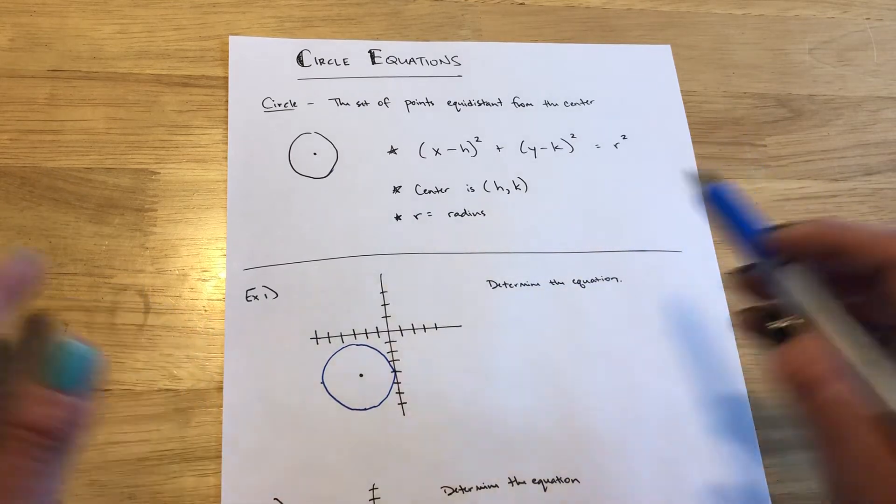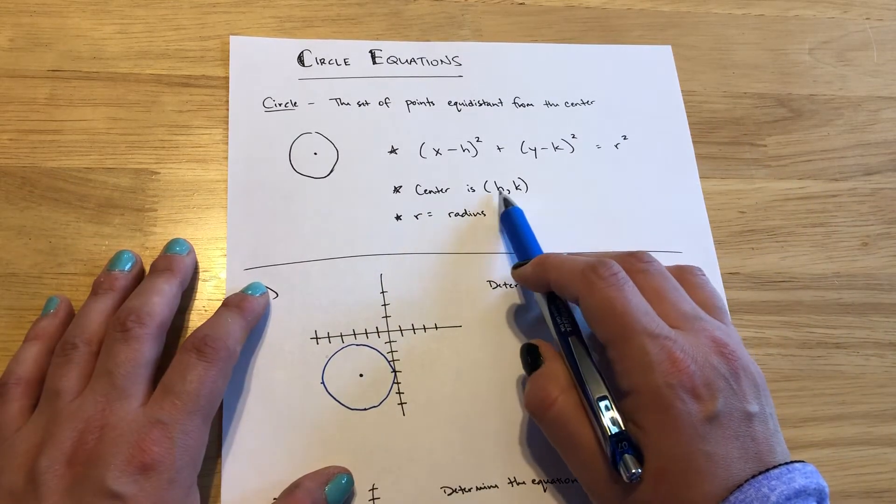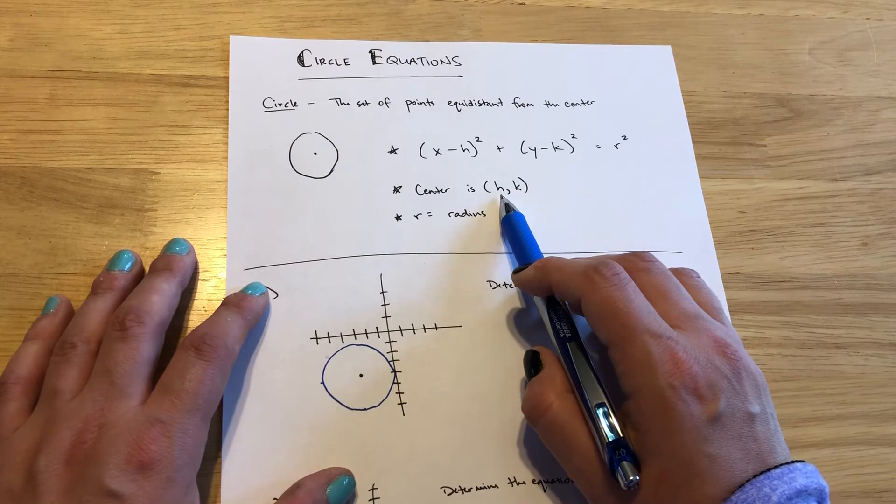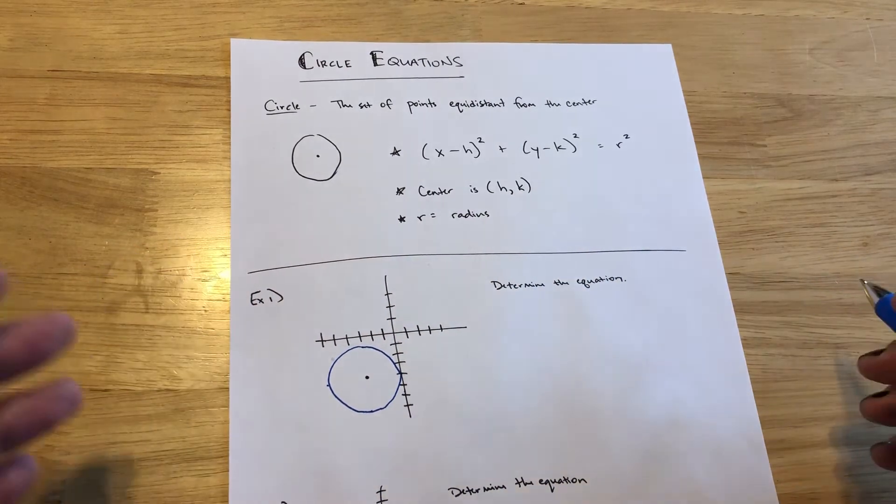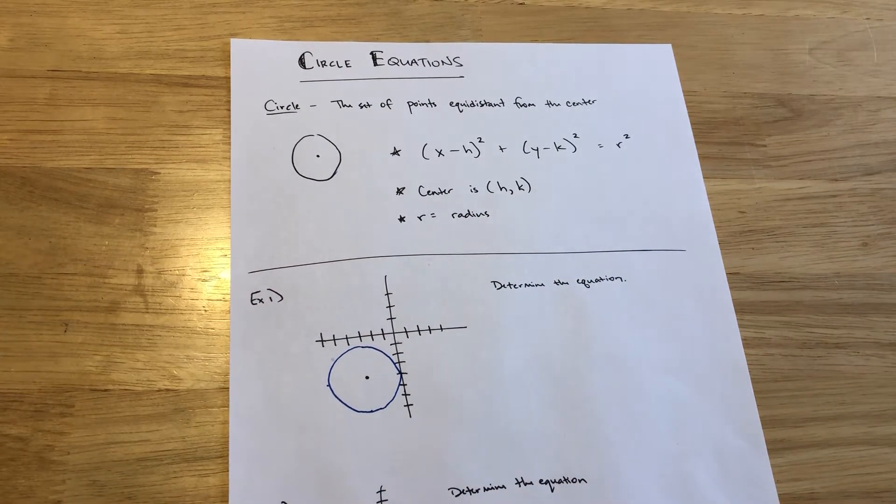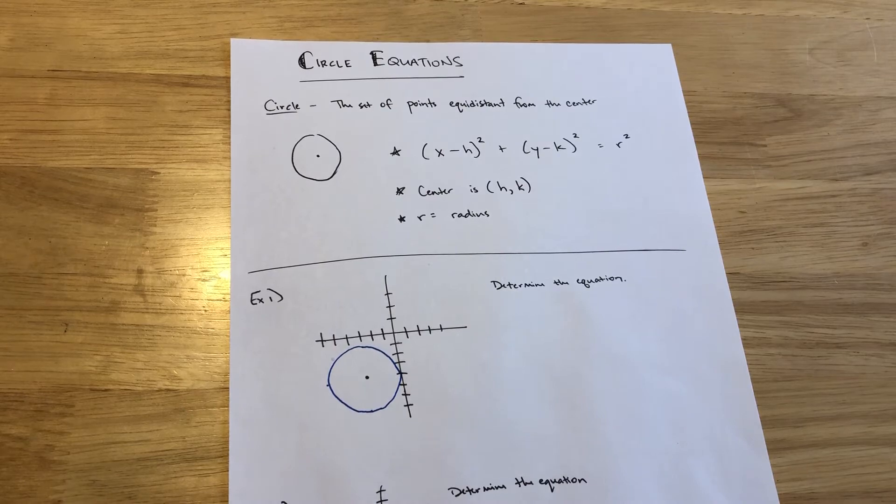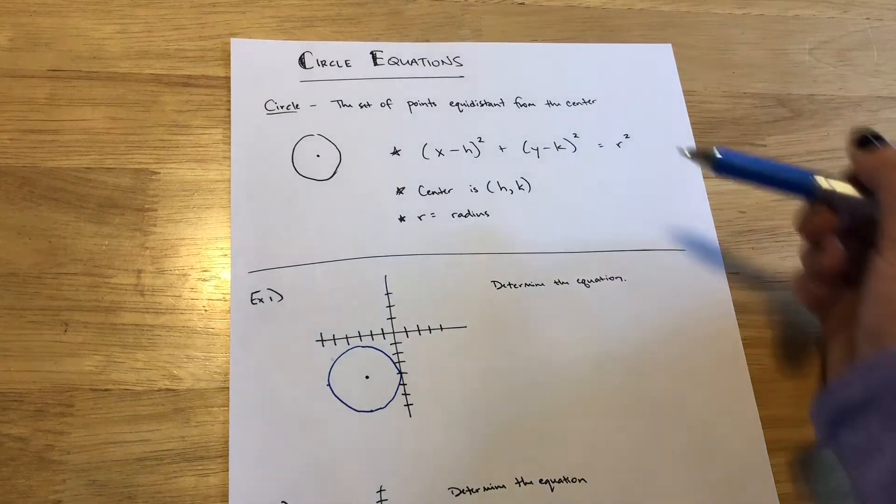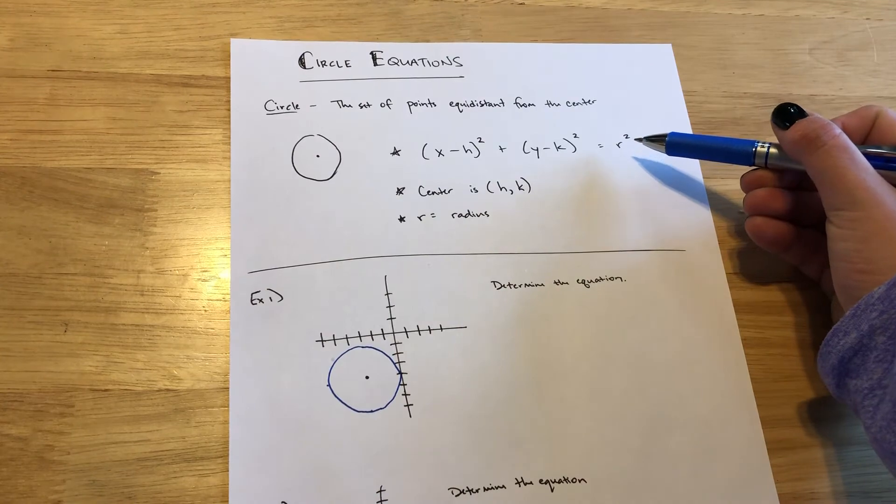So what are all these letters? Well h and k are coming from the center point. X and y remain variables and are showing that they're a specific distance from this h and k center location. Meanwhile, r is the radius.